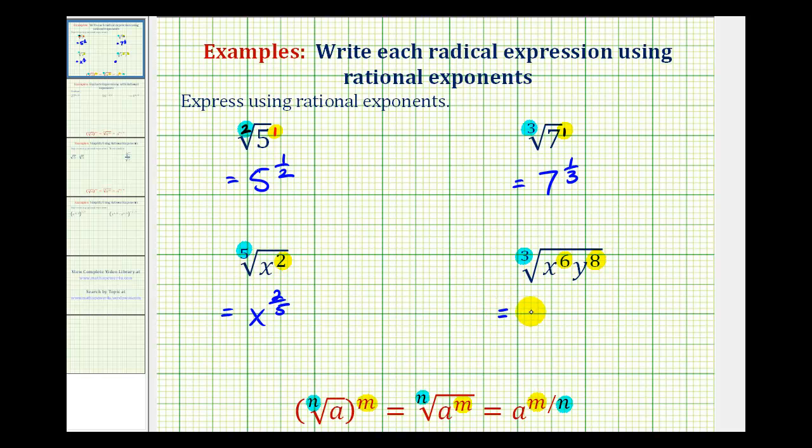So this is equal to x to the power of six-thirds and y to the power of eight-thirds, but notice how six-thirds simplifies to two, so we can write this as x to the second, y to the eight-thirds.